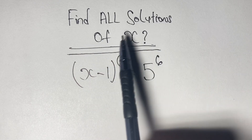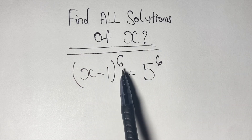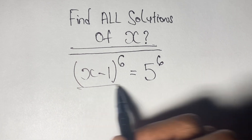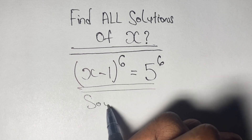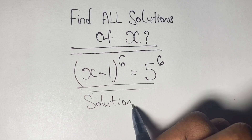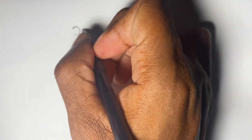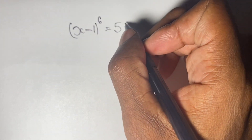Greetings again everyone, welcome back to my channel. Here we are given to find all the solutions of x, where we have x minus 1 to the power of 6 is equal to 5 to the power of 6. Let us go ahead and see if we can find all the solutions.